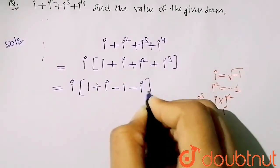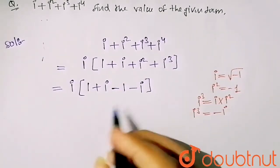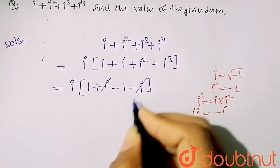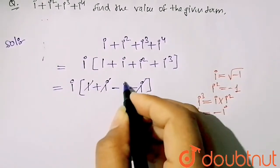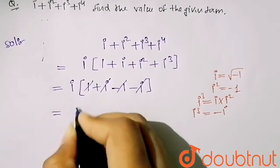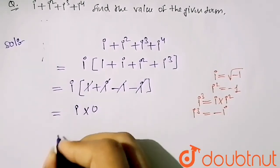Now plus iota and minus iota will cancel, and plus 1 and minus 1 will cancel. So you will get iota into 0. So your final value for this term will be 0. So I hope you understand the question, thank you.